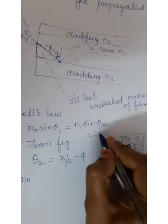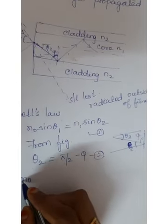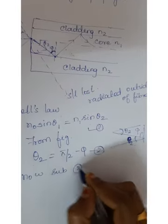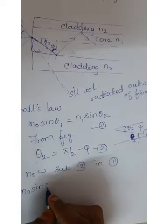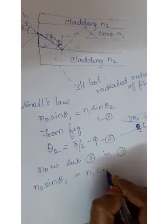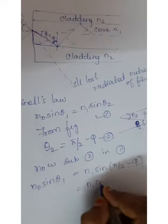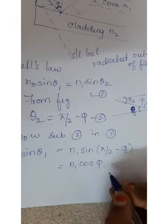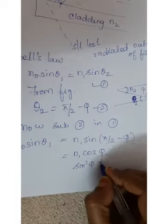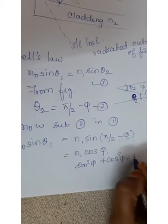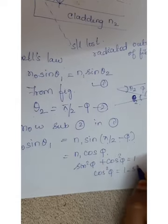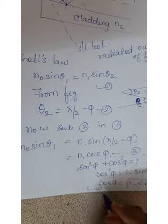Substitute equation 2 into equation 1. So N0 sine theta1 equals N1 sine(90 minus phi), and sine(90 minus phi) equals cos phi. Therefore N0 sine theta1 equals N1 cos phi. This is equation number 3. Using the trigonometric identity, cos squared phi equals 1 minus sine squared phi, so cos phi equals root of (1 minus sine squared phi). This is equation number 4.